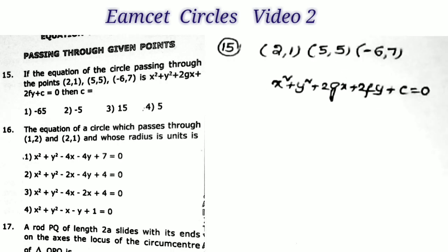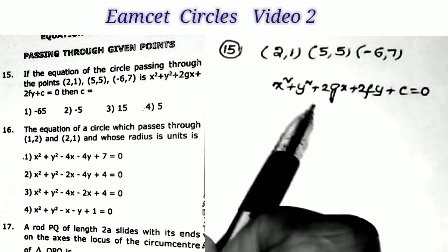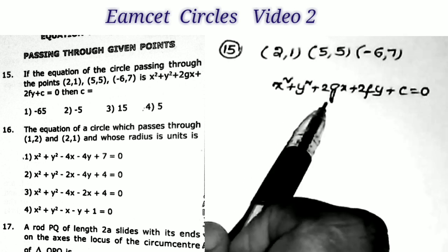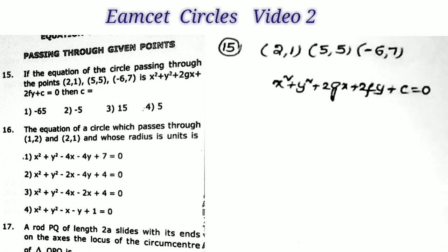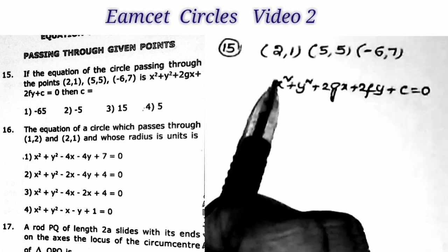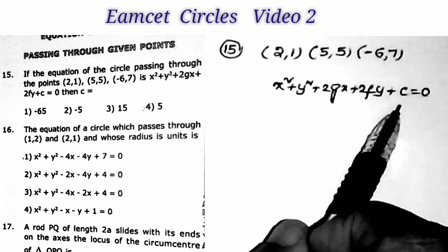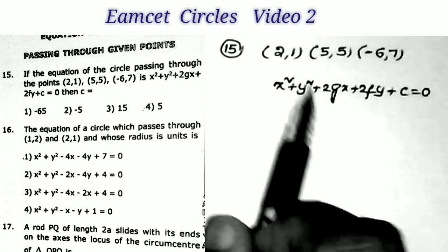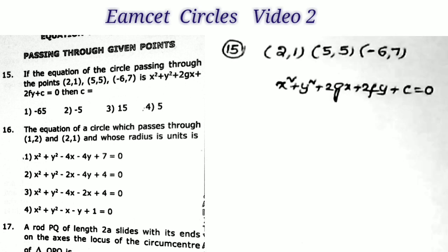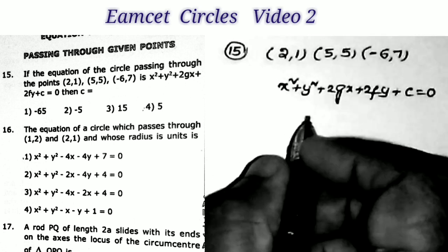Sum number 15: If the equation of the circle passing through the points (2, 1), (5, 5), and (−6, 7) is x² + y² + 2gx + 2fy + c = 0, then what is the value of c? We need to find the equation of the circle passing through these three points.